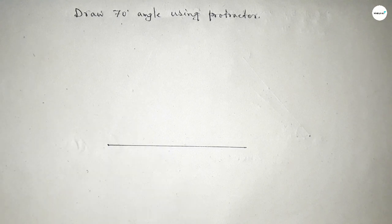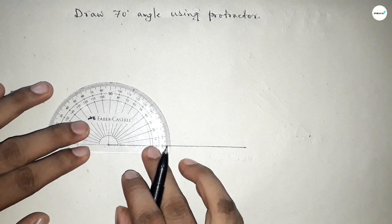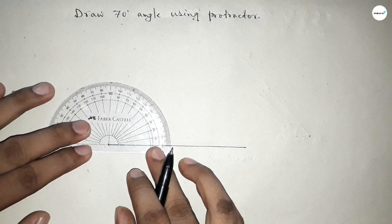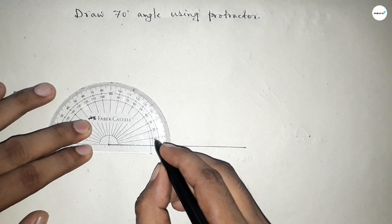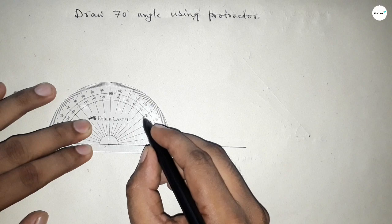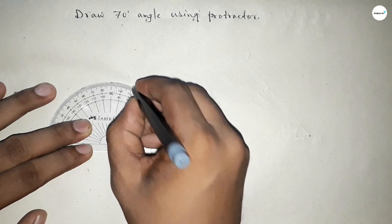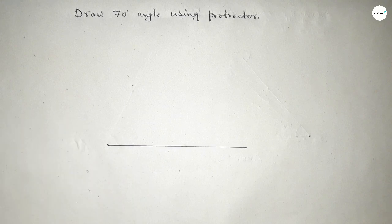Now using protractor to draw 70 degrees. Putting the protractor perfectly on the line. Now counting the angle, so this is 0, 10, 20, 30, 40, 50, 60 and this is 70. So this is 70 degrees.